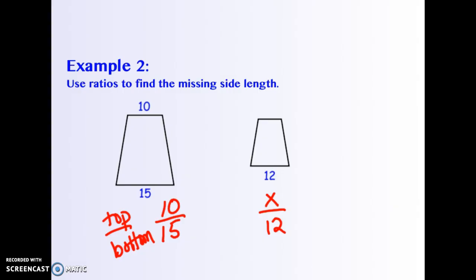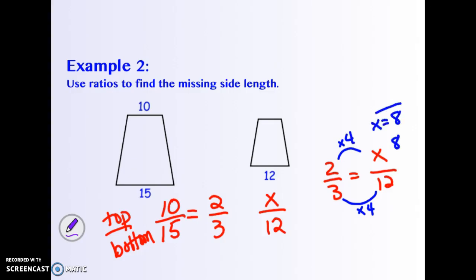So I'm going to reduce 10 fifteenths because I think that makes it a lot easier to work with. So I just want to know 2 thirds equals what over 12. If you don't have that memorized automatically, you can just use your fraction scaling up skills. So 3 times 4 is 12, so 2 times 4 is 8. Therefore, X must equal 8, and 8 is my missing side length.